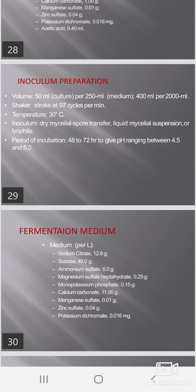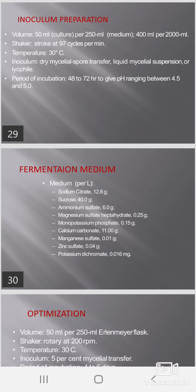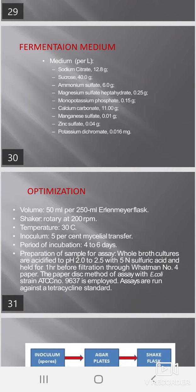Fermentation medium formulation: sodium citrate 12.5g, sucrose 40g, ammonium sulfate 6.6g, magnesium sulfate heptahydrate 0.25g, monopotassium phosphate 0.15g, calcium carbonate 11g, zinc sulfate 0.04g, potassium dichromate 0.01mg. Volume: 50ml per 250ml Erlenmeyer flask; shaker: rotatory at 200 RPM; temperature: 30°C; inoculum: 5% mycelial transfer; period of incubation: 4 to 6 days.